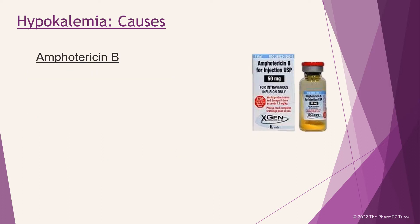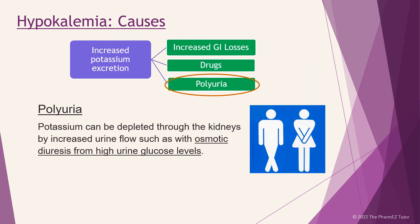Amphotericin B causes renal potassium wasting through the inhibition of the secretion of hydrogen ions by collecting duct cells, as well as by causing magnesium depletion. The third cause of increased potassium excretion is polyuria, where potassium can be depleted through the kidneys by increased urine flow, such as with osmotic diuresis from high urine glucose levels.